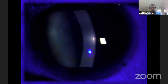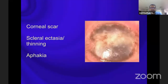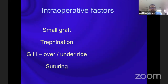A similar scenario occurs in a patient with keratoconus, in whom, if you don't incorporate the base of the cone into the area of trephination, you can get undesirable astigmatism. Similar things operate in corneal scar, and other pre-operative factors include scales like TASS and other grading systems.